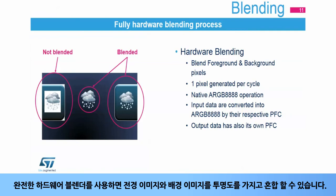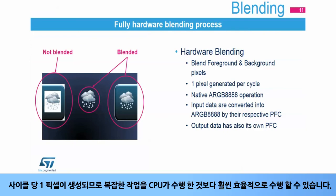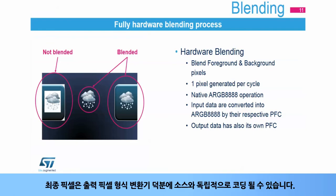The fully hardware blender blends a foreground image and a background image with transparency. This can be used to draw bitmap images of any shape with a perfect rendering. One pixel is generated per cycle, making this complex operation much more efficient than if it were done by the CPU. The resulting pixel can be coded independently from the source thanks to the output pixel format converter.